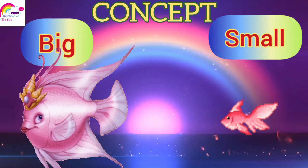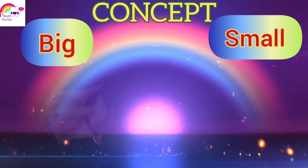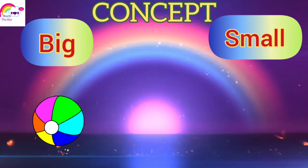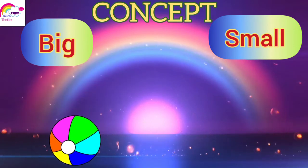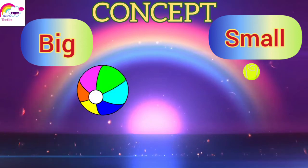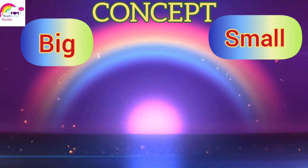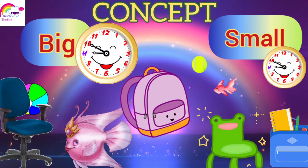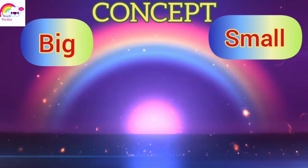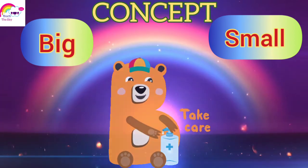Here is a big fish and here is a small fish. One more example: here is a big ball and a small ball. Observe around you — which things are big and which are small? Take care, bye!